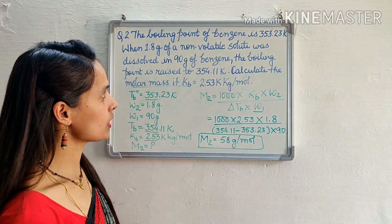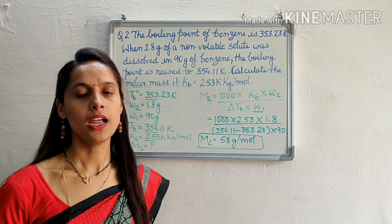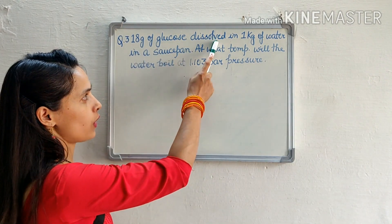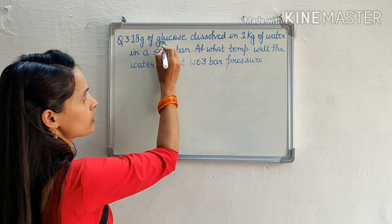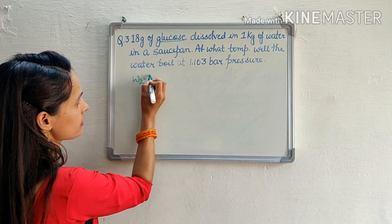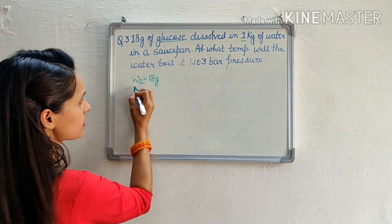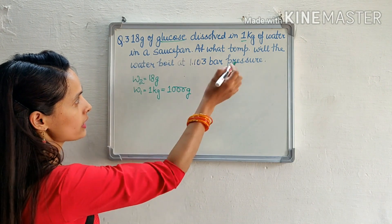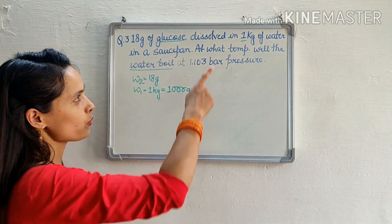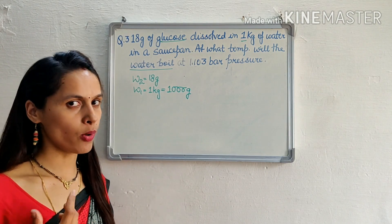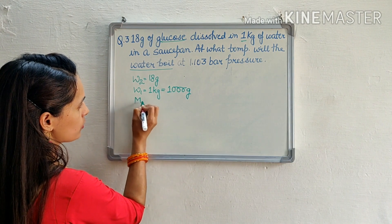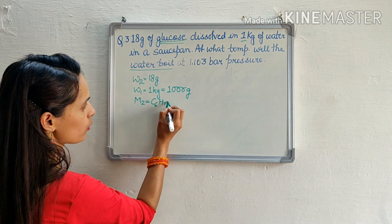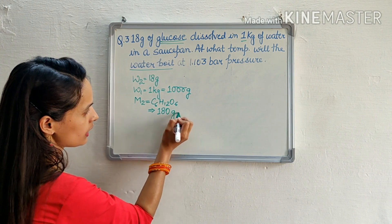Now we will move to our third numerical. 18 g of glucose is dissolved in 1 kg of water, so W2 = 18 g and W1 = 1000 g. We have to find at what temperature the solution will boil. Since glucose is the solute with formula C6H12O6, we can calculate its molar mass, which is 180 g/mol.